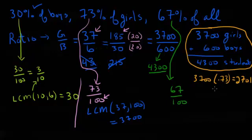All right. Well now let's check it for the boys. There's 600 boys, and 30% of them, well that's going to be 180. Now if I add that together, I should get 67% of all 4300 students.